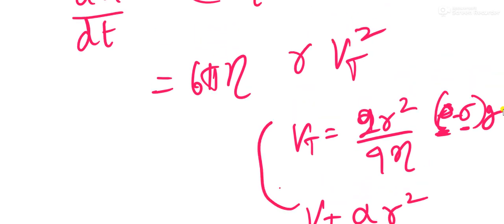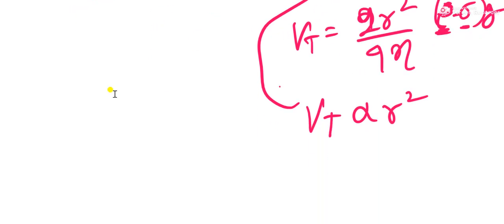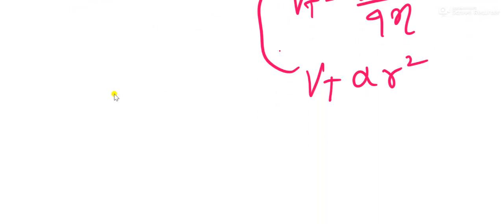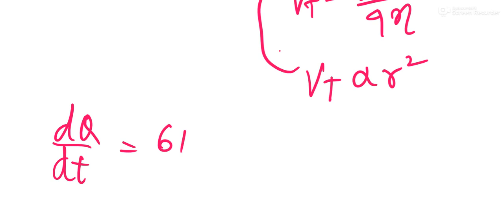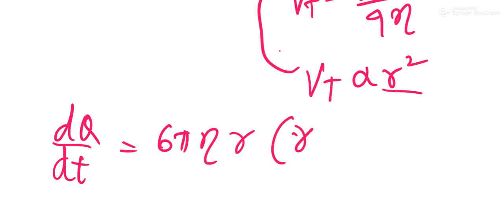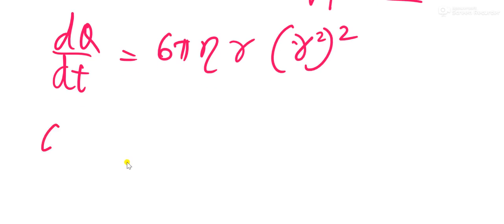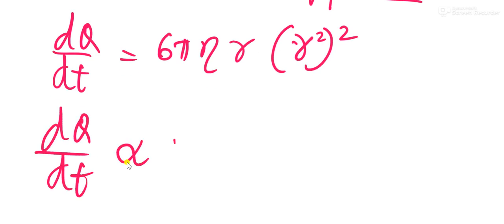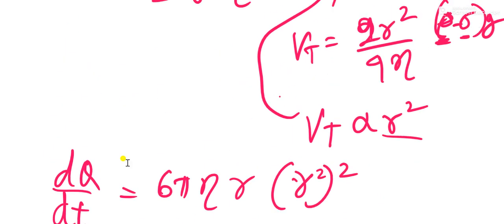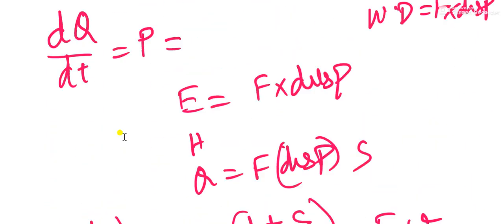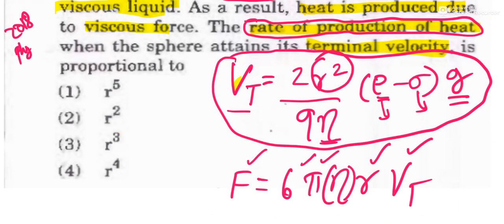Substituting into dQ/dt: we have one power of R from Stokes force and R⁴ from Vt². So dQ/dt is directly proportional to R¹ × R⁴ = R⁵. The rate of change of heat energy is directly proportional to the fifth power of the radius of the sphere ball. That is the final answer.